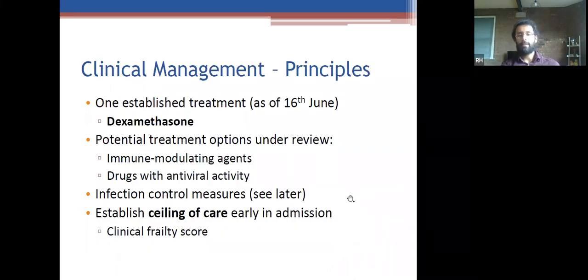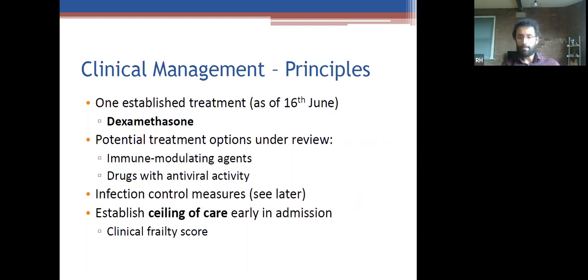Clinical management: we now have the first drug shown to have a mortality benefit — dexamethasone — recommended as of yesterday based on early findings from the recovery trial, which is looking at various drug options. Potential treatment options under review include immune-modulating agents and drugs with antiviral activity. Frailty scoring is very useful for determining appropriate escalation plans for patients.